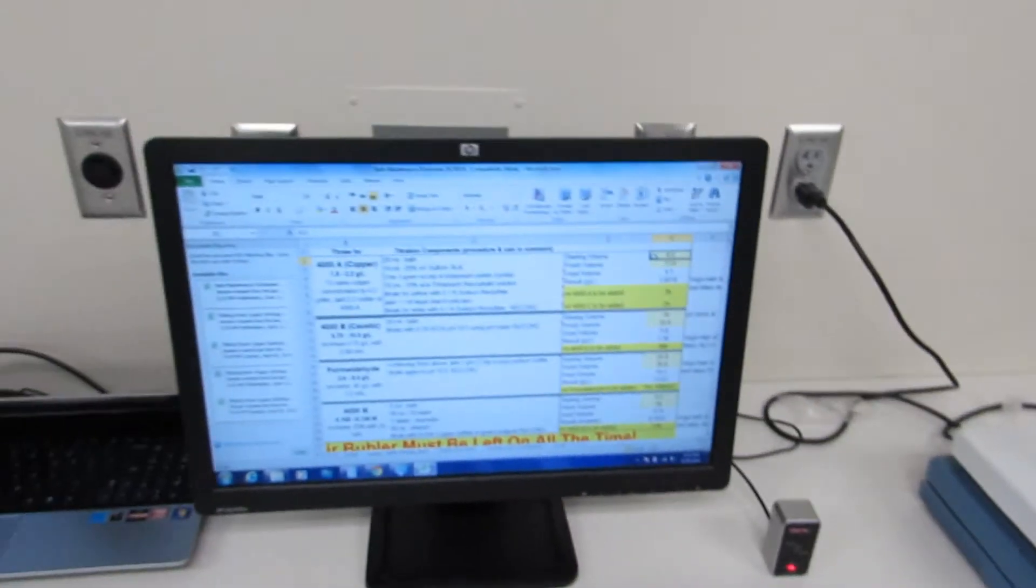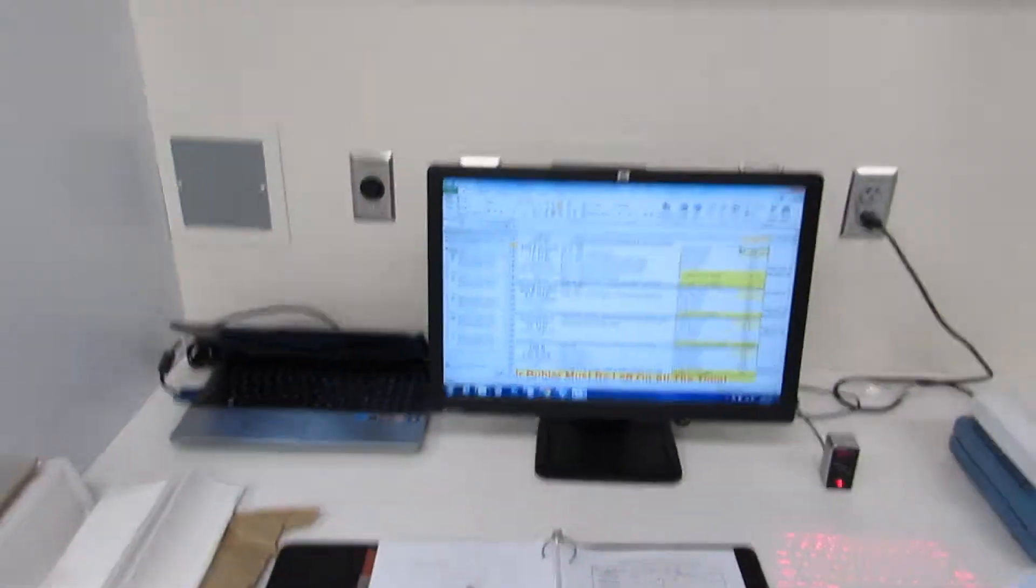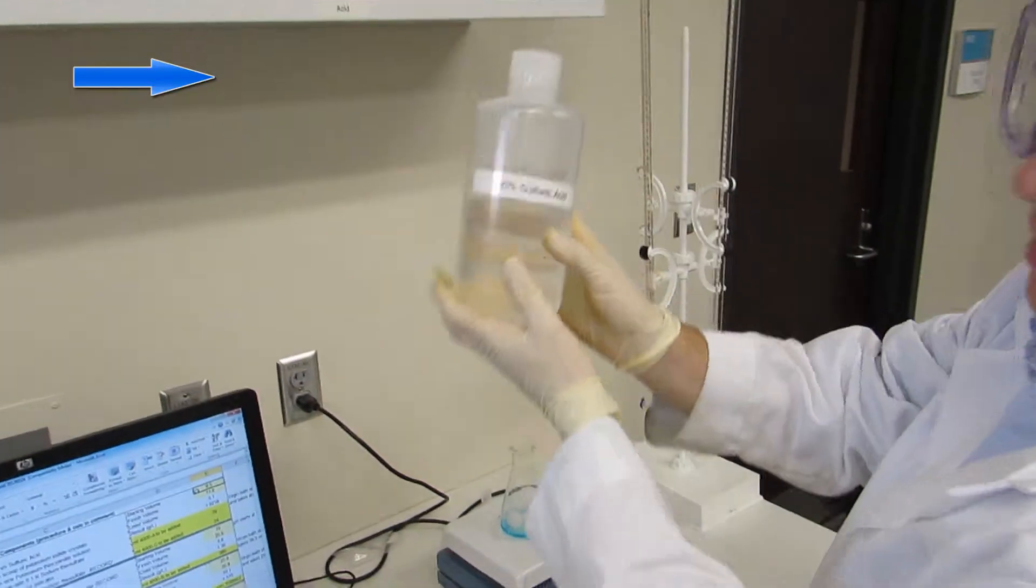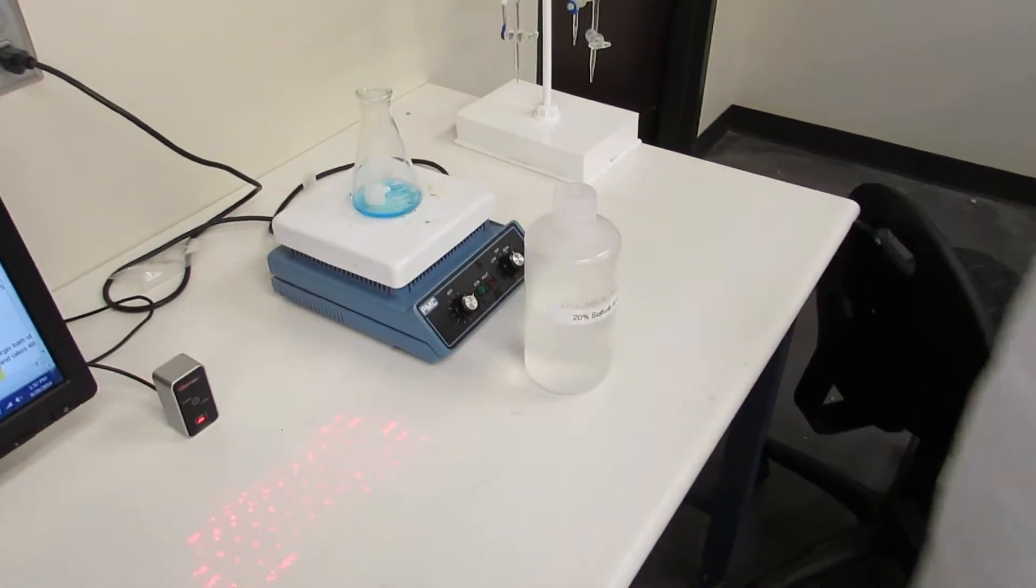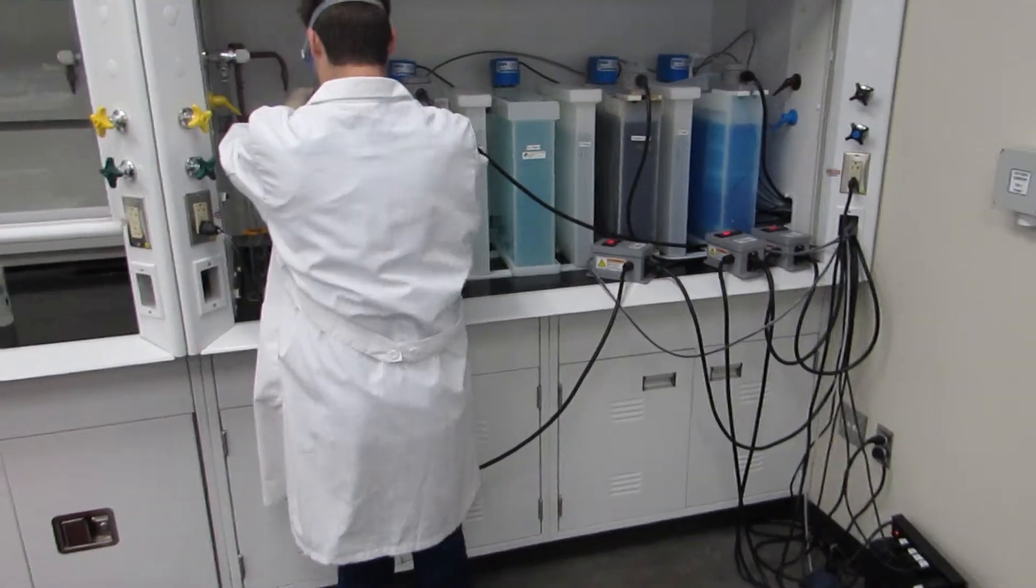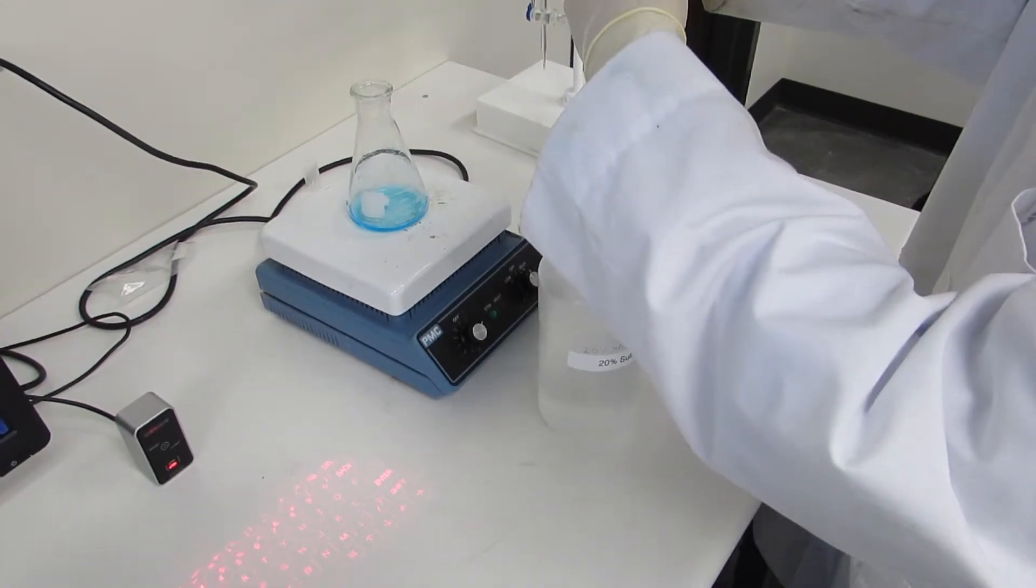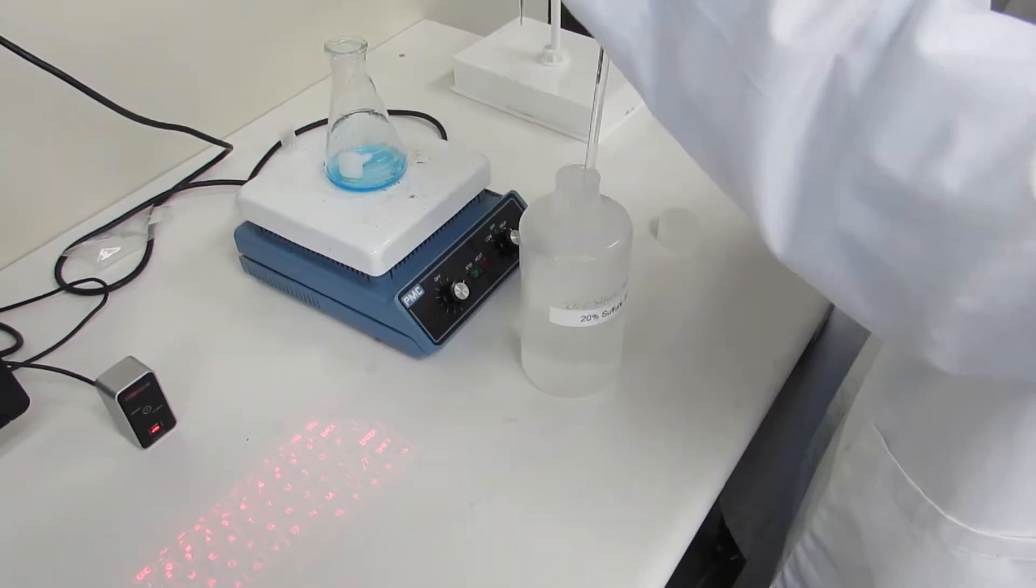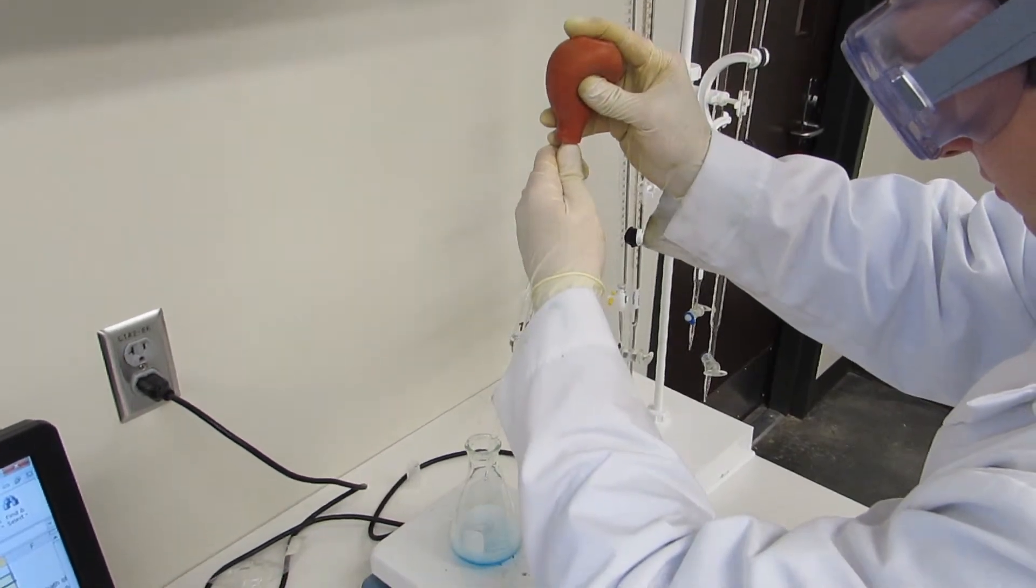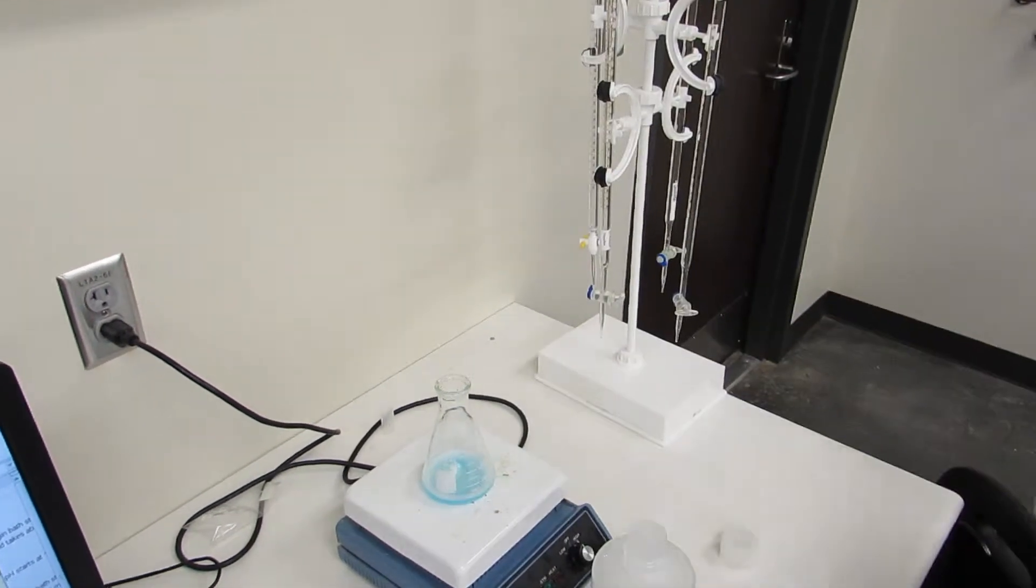The next step is 10 milliliters of 20% sulfuric acid. Keep that in the acid cabinet. Again, we'll use the same way of getting it out after triple rinsing. Then you clean this off again.